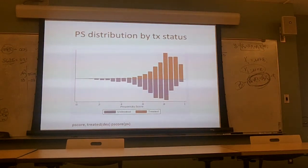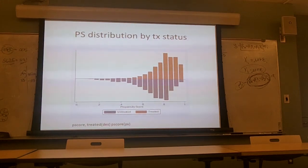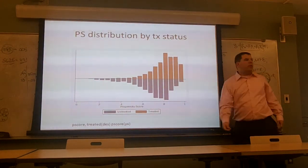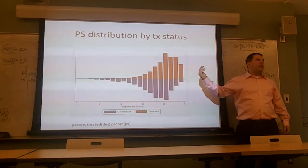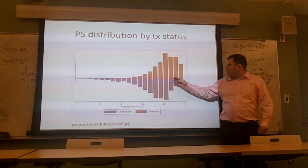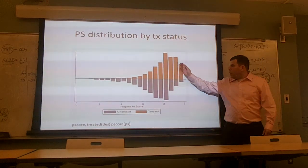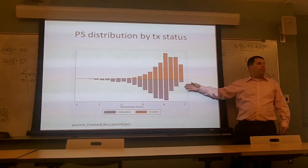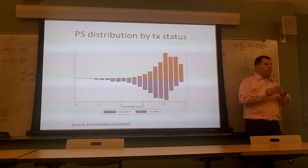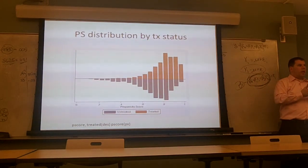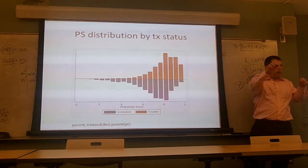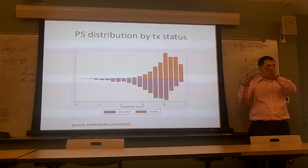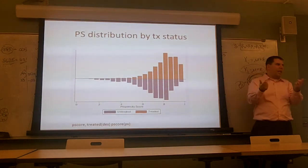This doesn't say anything about how good the logistic model is in a generic sense, but that's okay — we don't care about the generic sense. We're here aiming to get a good propensity score model and that's all we care about. The people down at low propensity values represent the counterfactual for the treated people. Rather than matching on age alone, or matching age and sex and race and clinical characteristics manually, propensity scores condense all that into a single unidimensional metric.